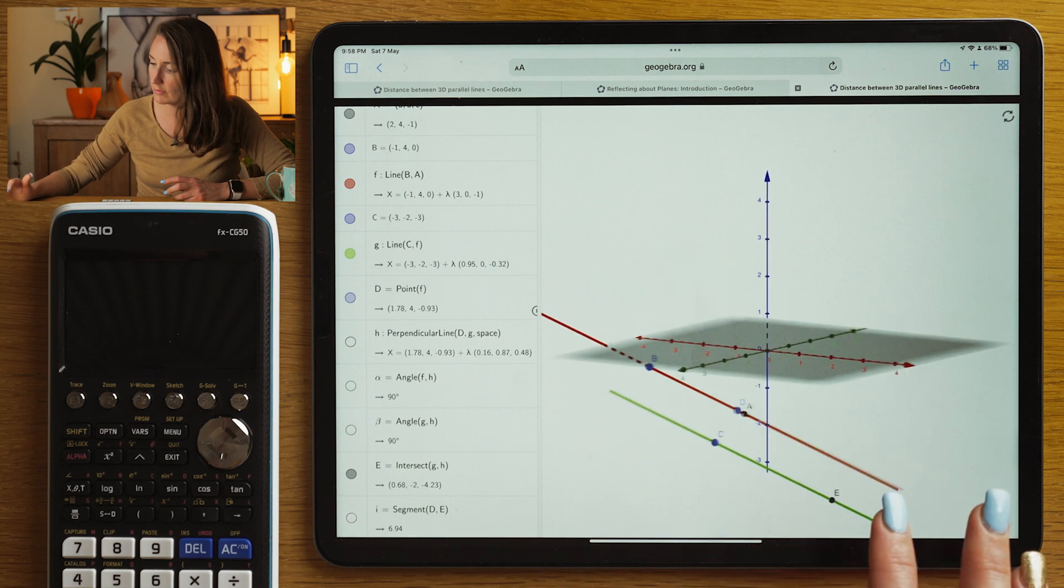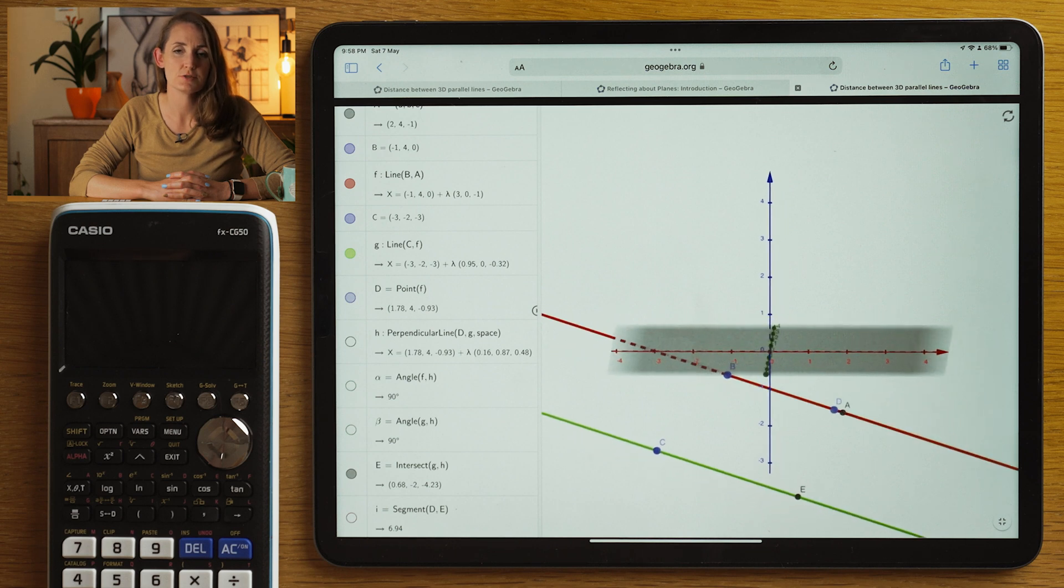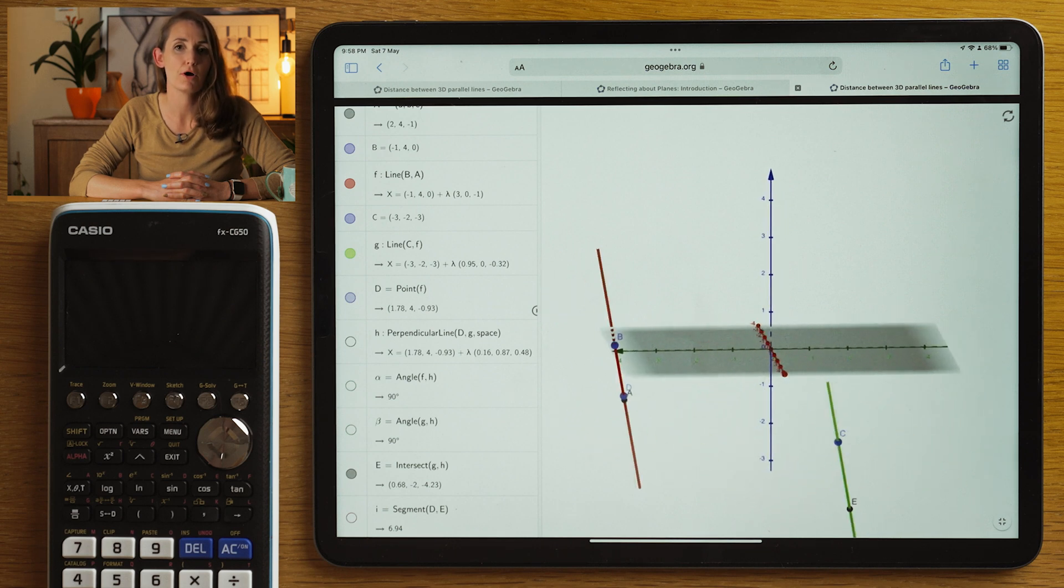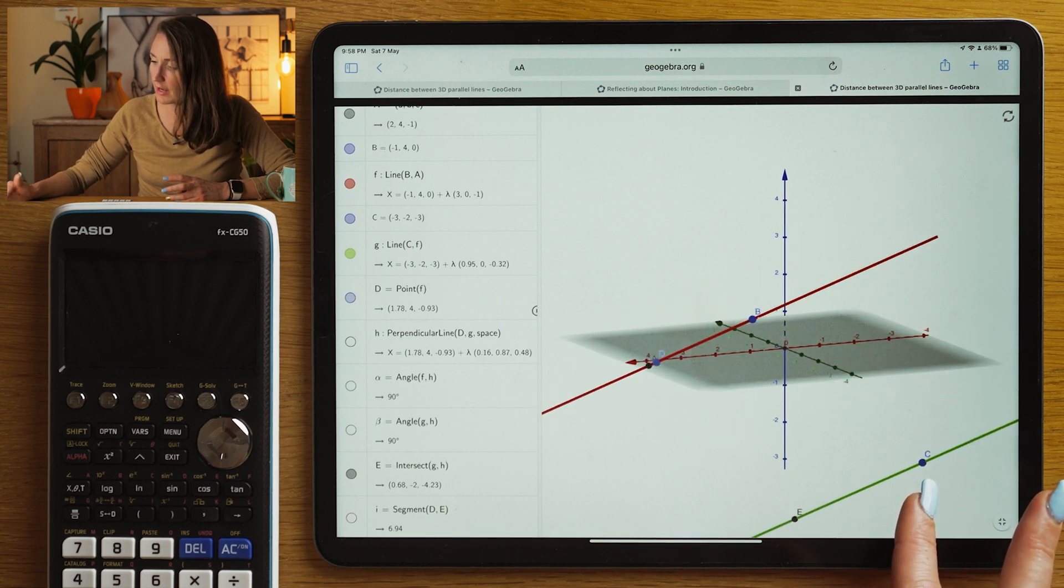We spin it round. We should know that the shortest distance always lies along the perpendicular. So what we want to do is work out what the perpendicular line is.